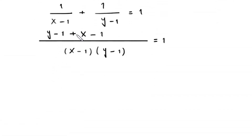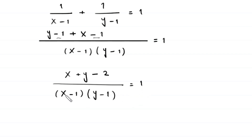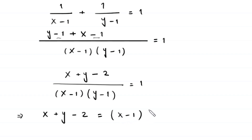We rearrange the terms: this becomes (x plus y minus 2) divided by (x minus 1)(y minus 1) equals 1. Multiplying both sides by (x minus 1)(y minus 1), this implies that x plus y minus 2 equals (x minus 1)(y minus 1).